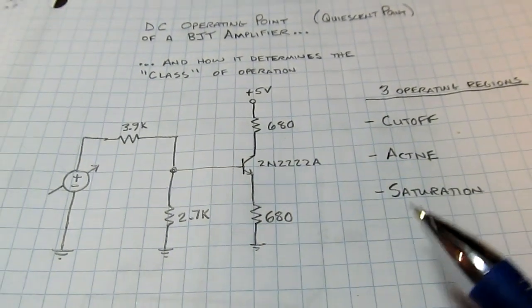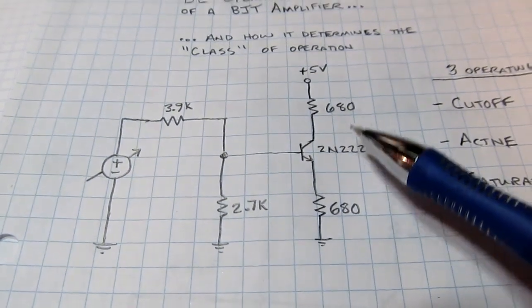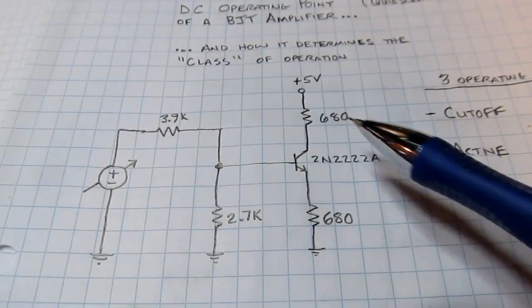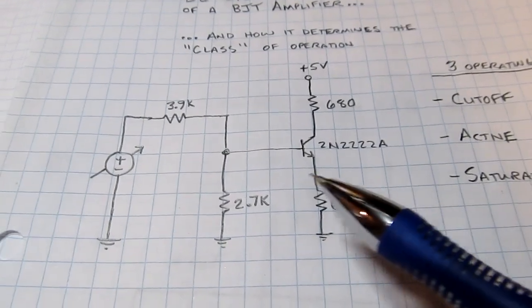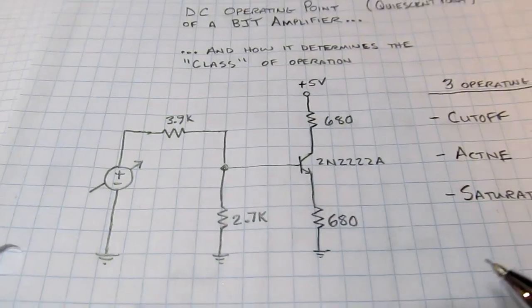We'll take a look at each of those things. I've got this simple circuit set up on the breadboard: an NPN transistor, equal resistors in the collector and emitter, and a variable DC voltage supply that I can use to vary the base voltage.